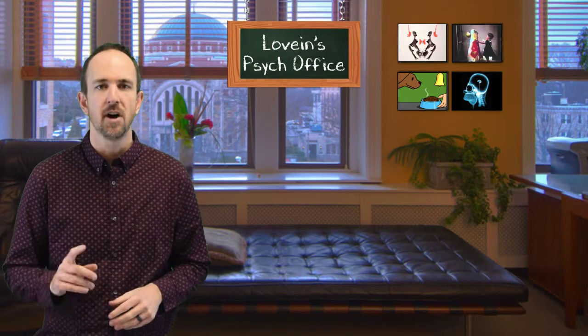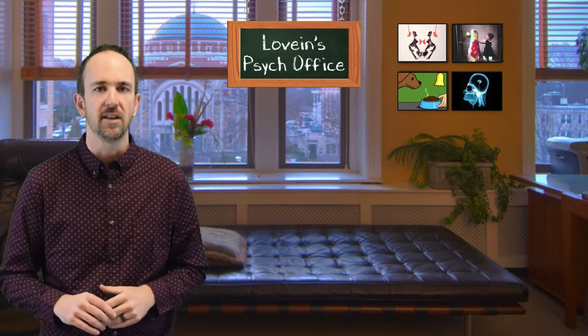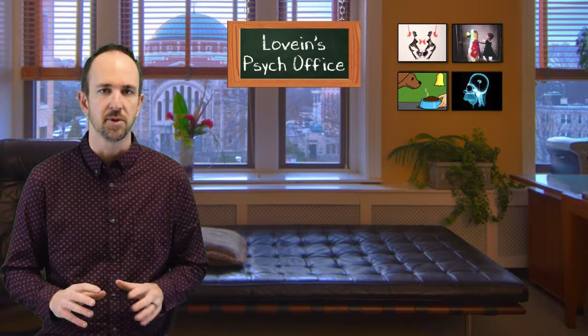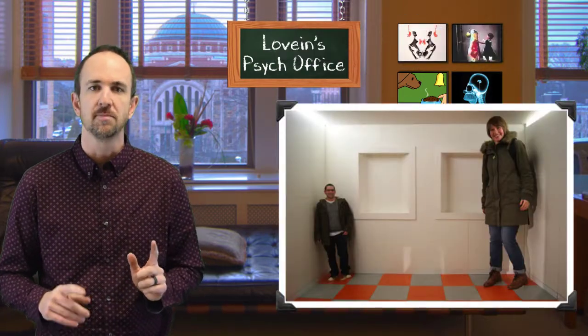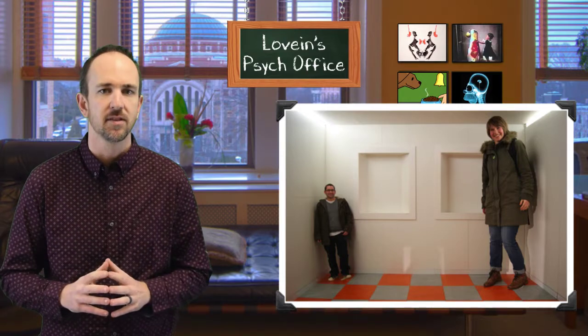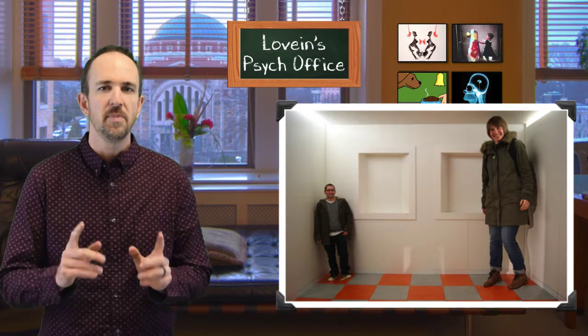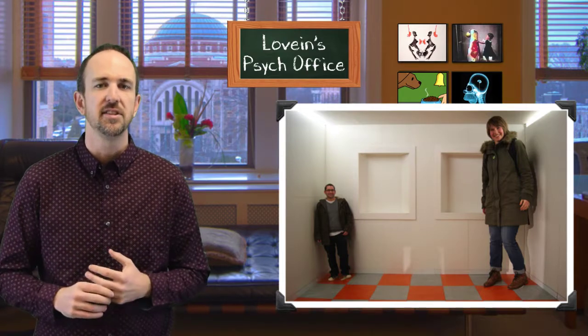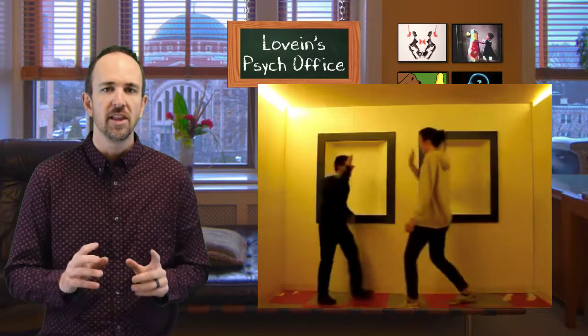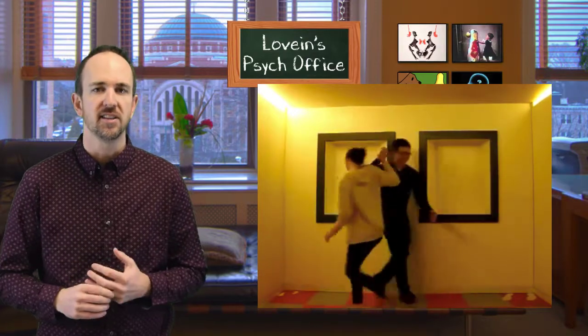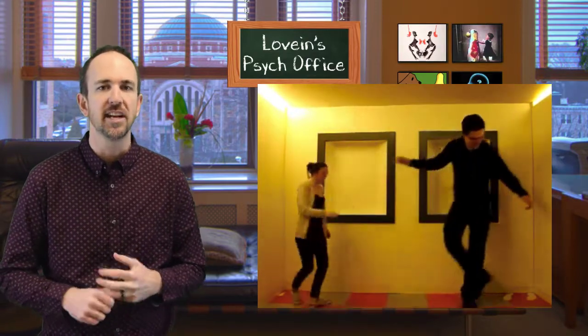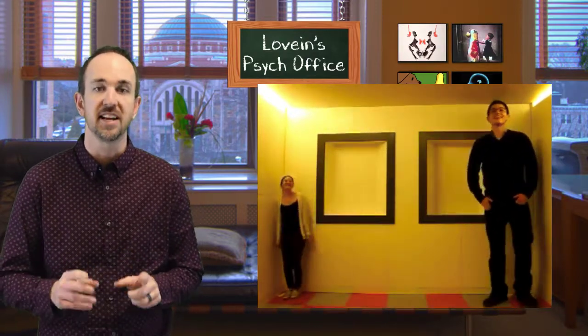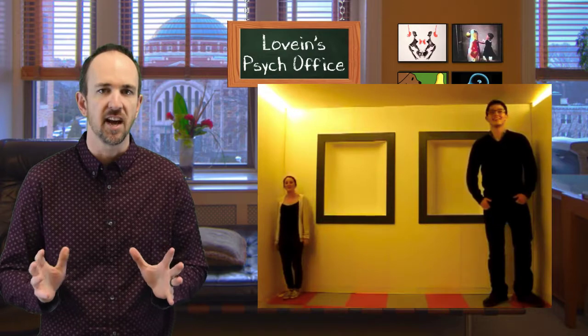One famous example of how monocular cues can fail us is the Ames room. Looking at the image, one person appears much bigger than the other. When the people switch sides, you can see the Ames room in action. The way the room is constructed is meant to trick your brain into thinking you are seeing one person that is much bigger than the other.